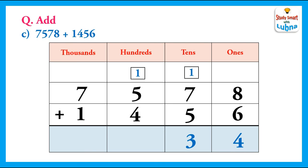After this we will add the hundreds. In the hundreds column we have 1, 5 and 4. 1 plus 5 is 6, and 6 plus 4 equals 10. So we will regroup the hundreds. We write 0 in the hundreds column and carry 1 to the thousands column. Now we add the thousands: 1 plus 7 is 8, and 8 plus 1 is 9. So after adding 7578 and 1456 we have got 9034.